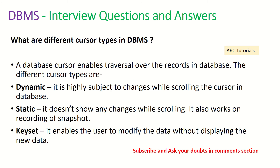What are the different cursor types available in DBMS? A database cursor enables traversal over the records in a database to fetch and query all records. The cursor types are: dynamic — highly subject to changes while scrolling; static — doesn't show any changes while scrolling and works on a snapshot of records; and keyset — enables the user to modify data without displaying new data.